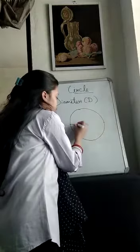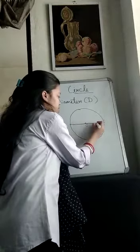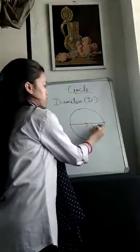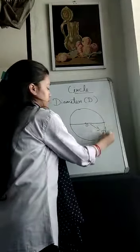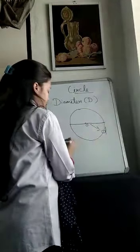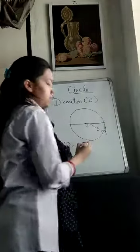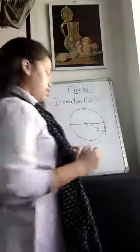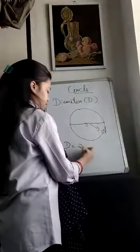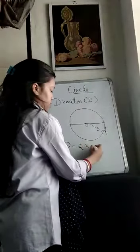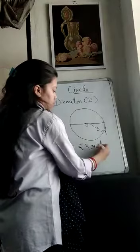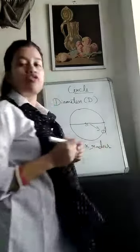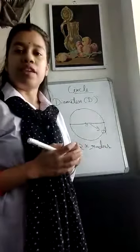That is the diameter of a circle. And diameter is twice the radius.